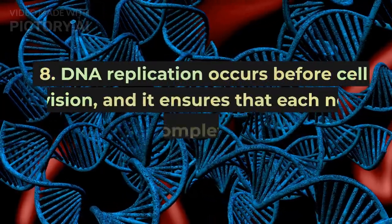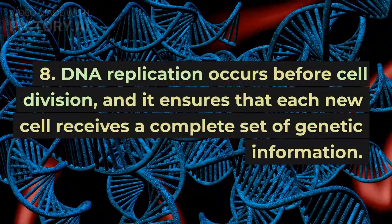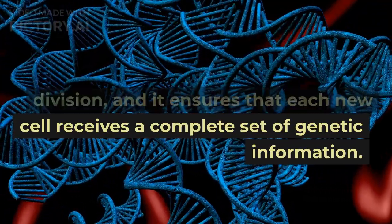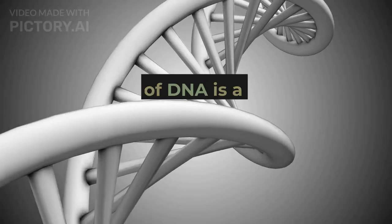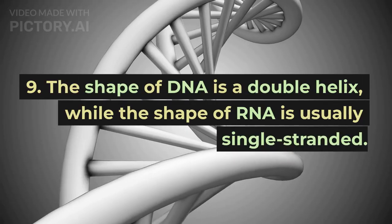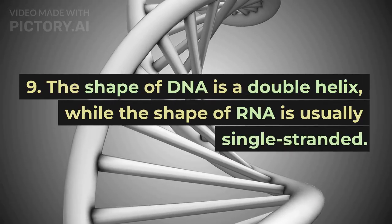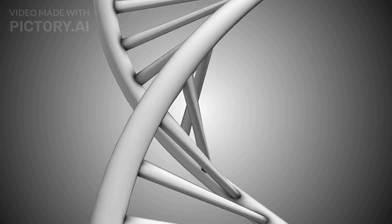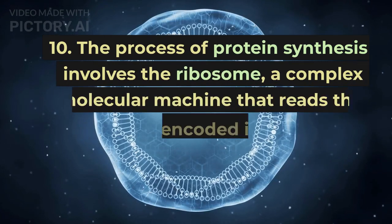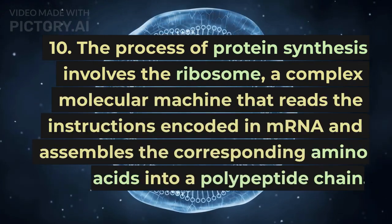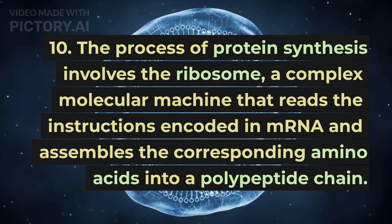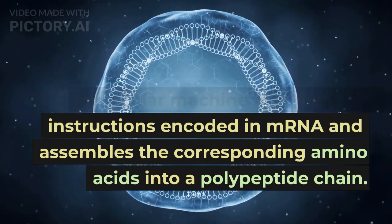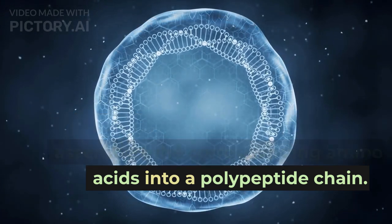DNA replication occurs before cell division, and it ensures that each new cell receives a complete set of genetic information. The shape of DNA is a double helix, while the shape of RNA is usually single-stranded. The process of protein synthesis involves the ribosome, a complex molecular machine that reads the instructions encoded in mRNA and assembles the corresponding amino acids into a polypeptide chain.